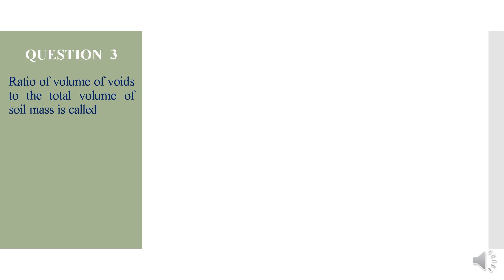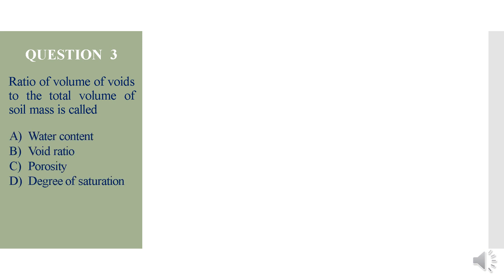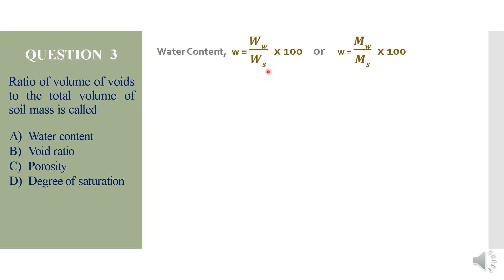Question 3: Ratio of volume of voids to the total volume of soil mass is called — options are water content, void ratio, porosity, or degree of saturation. Water content is the ratio of weight of water to the weight of solids in a given soil mass, usually expressed as a percentage: (weight of water / weight of solids) × 100. If masses are known instead of weights, masses can be substituted.